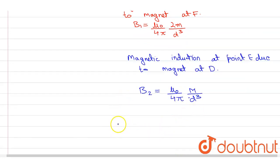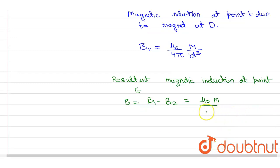So resultant magnetic induction at point E will be equal to B which is equal to B1 minus B2. So this becomes mu naught into M divided by 4 pi D cube.